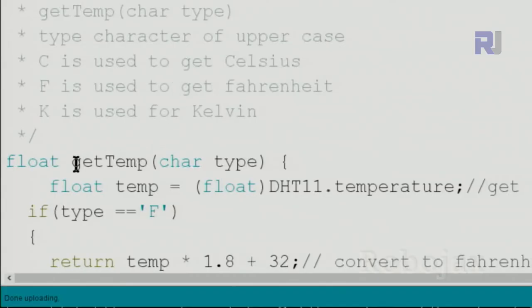I created this function called get_temp and you just define the type that you want. For example, if your type can be F, you can put C for Celsius, F for Fahrenheit, K for Kelvin, and you can get all the values. Whichever value you need you just pass it and it will return as a type float.